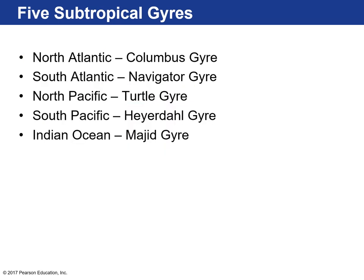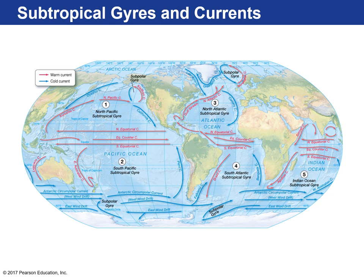On Earth there are five major subtropical gyres. The North Atlantic gyre is called the Columbus gyre, the South Atlantic is called the Navigator gyre, and then there are North Pacific, South Pacific, and one Indian Ocean subtropical gyre. Here they all are — North Pacific, South Pacific, centered at 30 degrees south; North Atlantic and South Atlantic, centered at 30 degrees north and south respectively; and the Indian Ocean subtropical gyre.